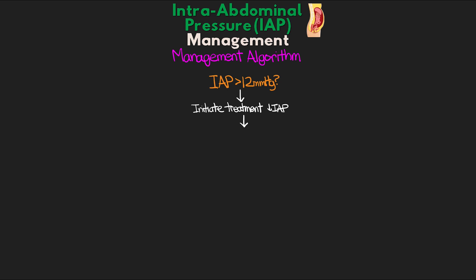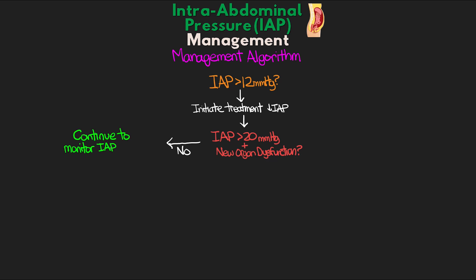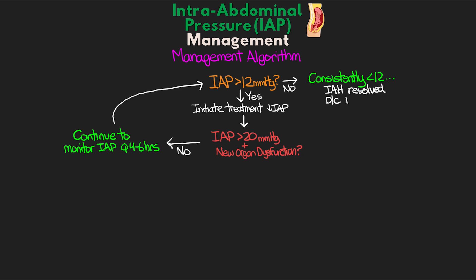We want to be checking if our patient's intra-abdominal pressure is greater than 20 with signs of new organ dysfunction. If they don't meet both of these criteria, then we need to continue to monitor intra-abdominal pressure at least every four to six hours, if not more often. There are setups such as using a three-way Foley that do allow for continuous monitoring as well. If at any point intra-abdominal pressure falls below 12 and consistently stays there, we can consider their intra-abdominal hypertension to be resolved. If the intra-abdominal pressure is greater than 20 and new organ dysfunction is present, then this patient has abdominal compartment syndrome.